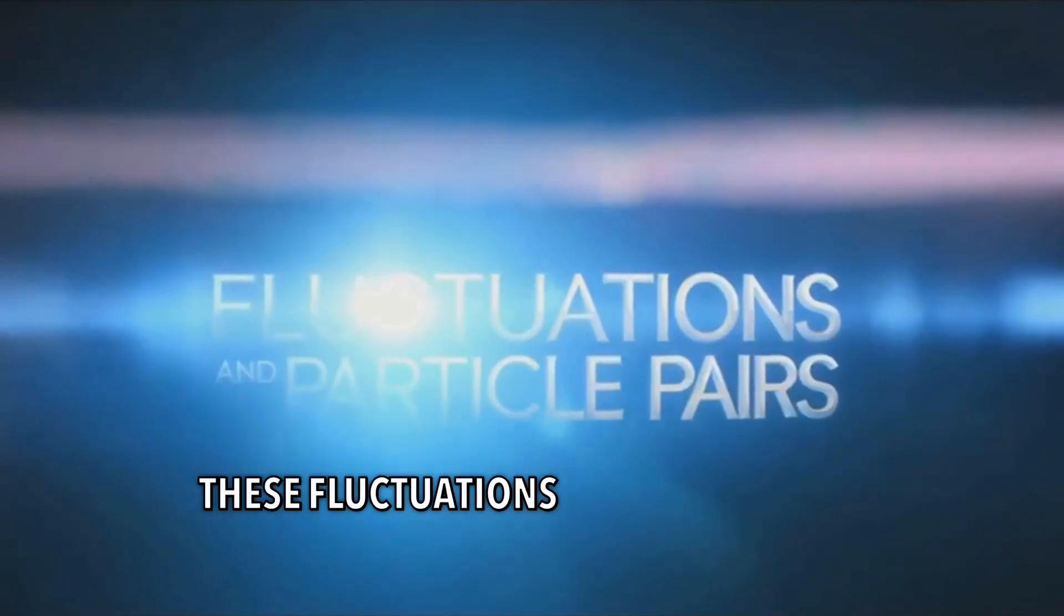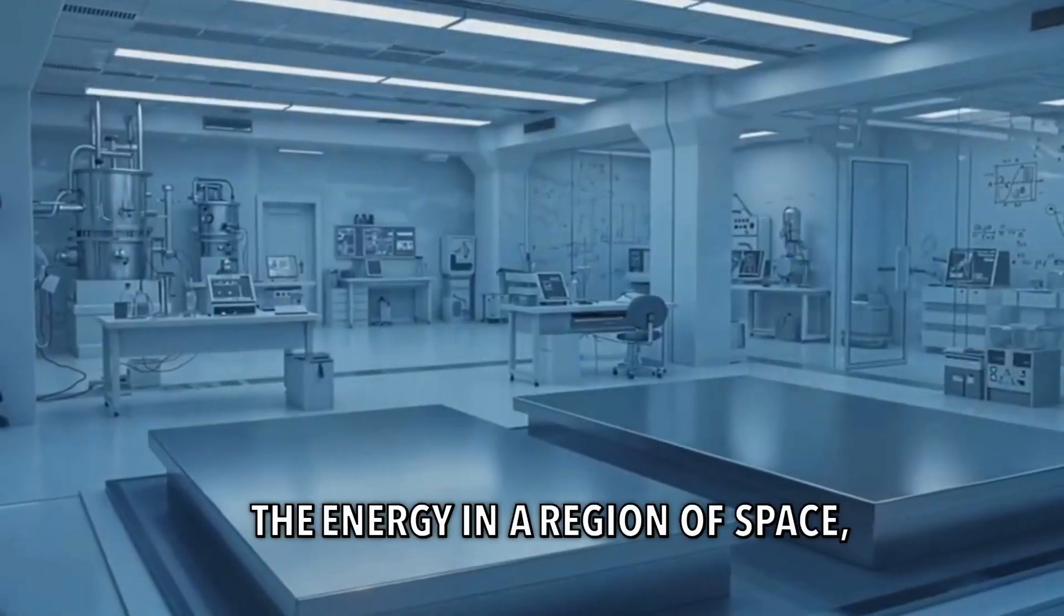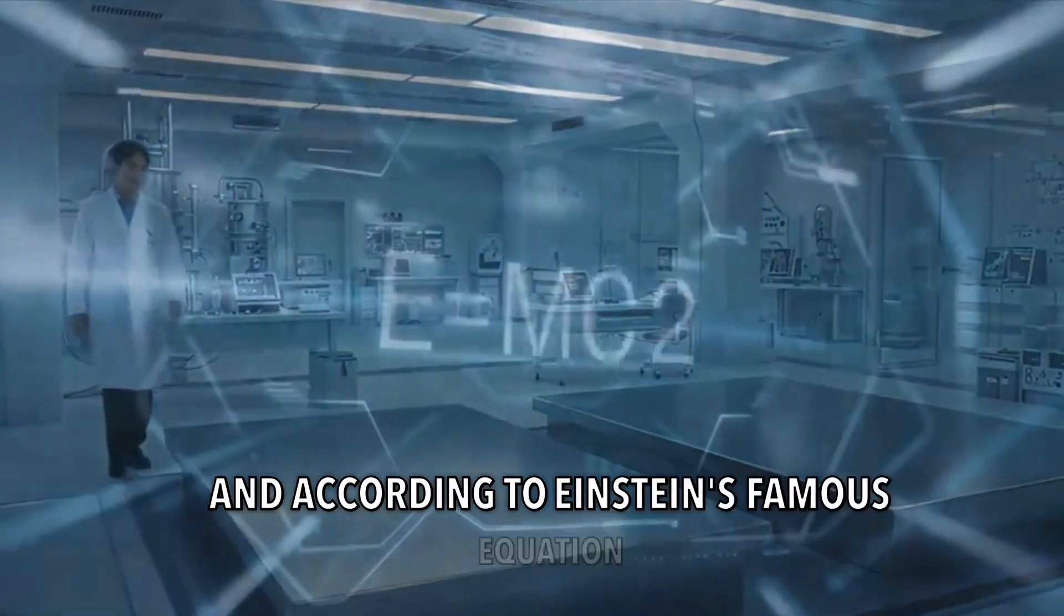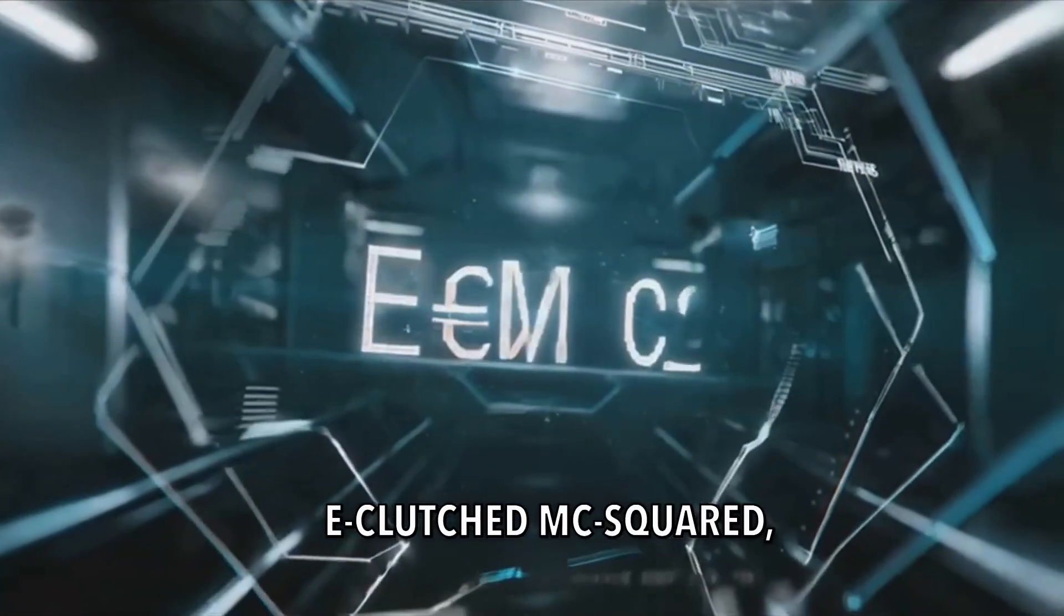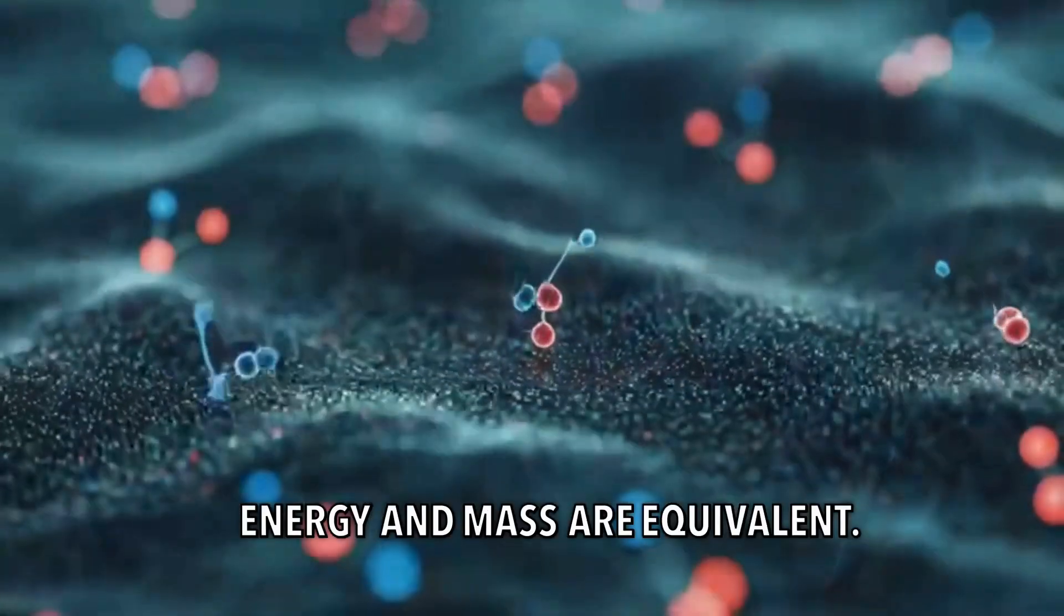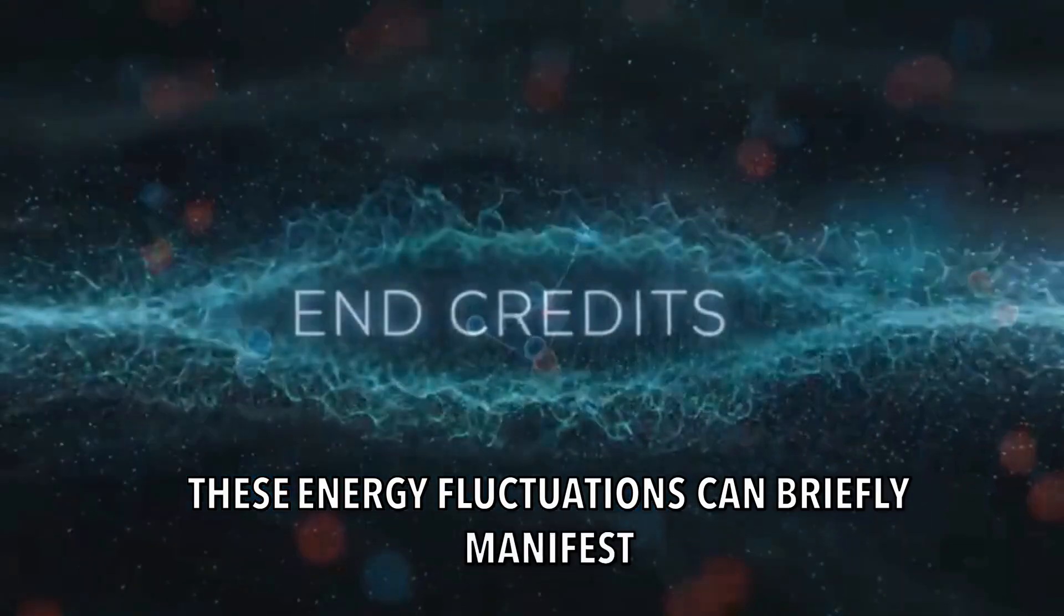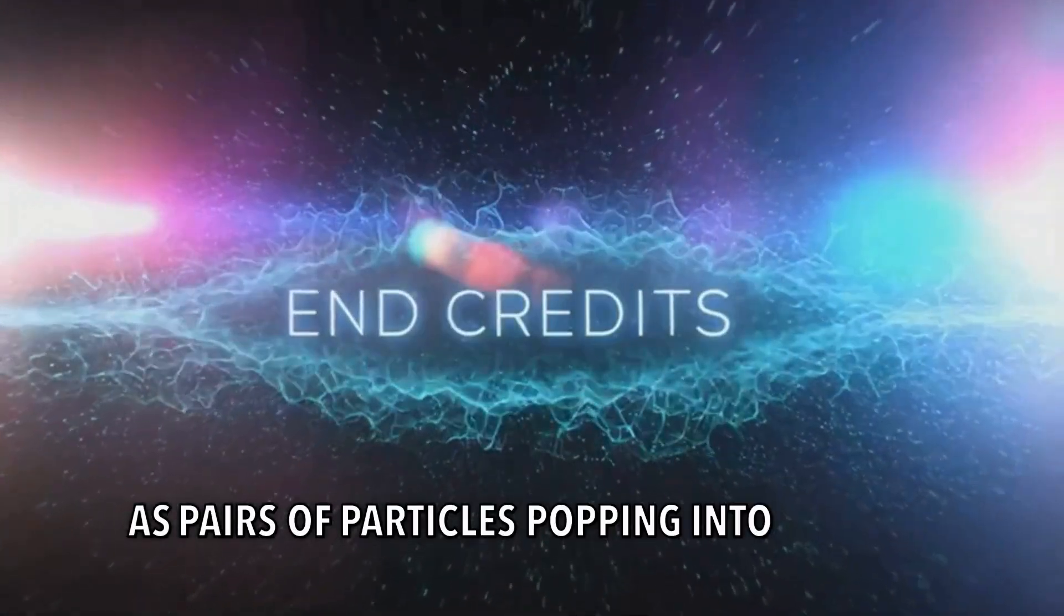As a result, the energy of the field is constantly fluctuating. These fluctuations can momentarily increase the energy in a region of space. And according to Einstein's famous equation, E equals MC squared, energy and mass are equivalent. So these energy fluctuations can briefly manifest as pairs of particles popping into existence.